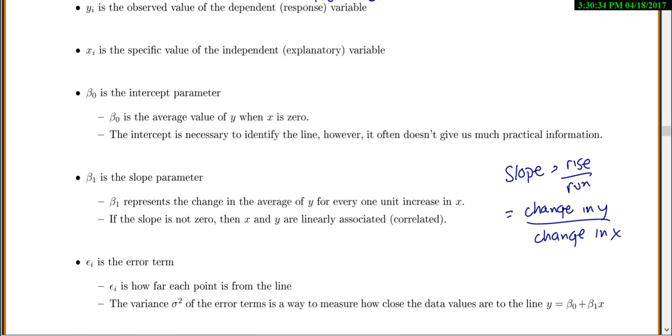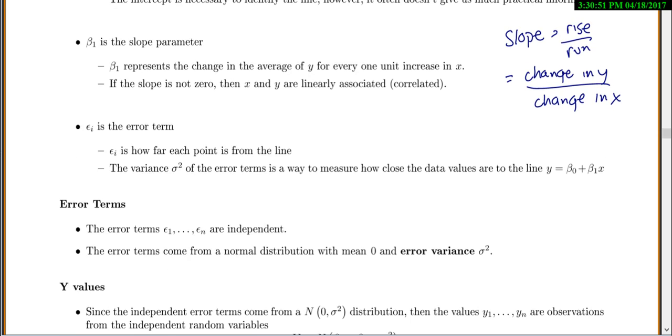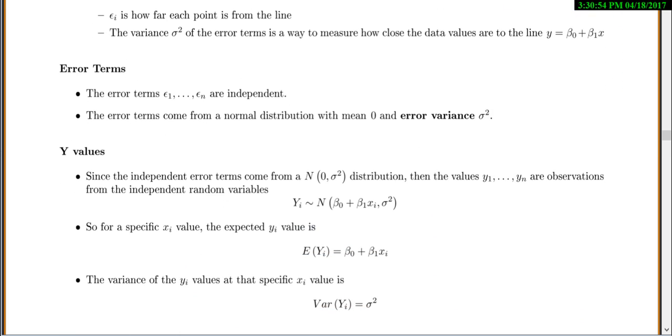And epsilon i is the error term. That tells you how far each point is from the line. So the important thing to remember is the error is how far your point is from the line. And you can find the variance of all of your different error terms, and that's the way for us to measure how close our data points actually are to the line. Now, some theory about our error terms that you probably won't really remember is that the error terms are supposed to be independent. That means that one point should not affect the other point. And the error terms are supposed to come from a normal distribution with a mean of 0 and an error variance, which we'll call sigma squared, just the variance of all the errors.